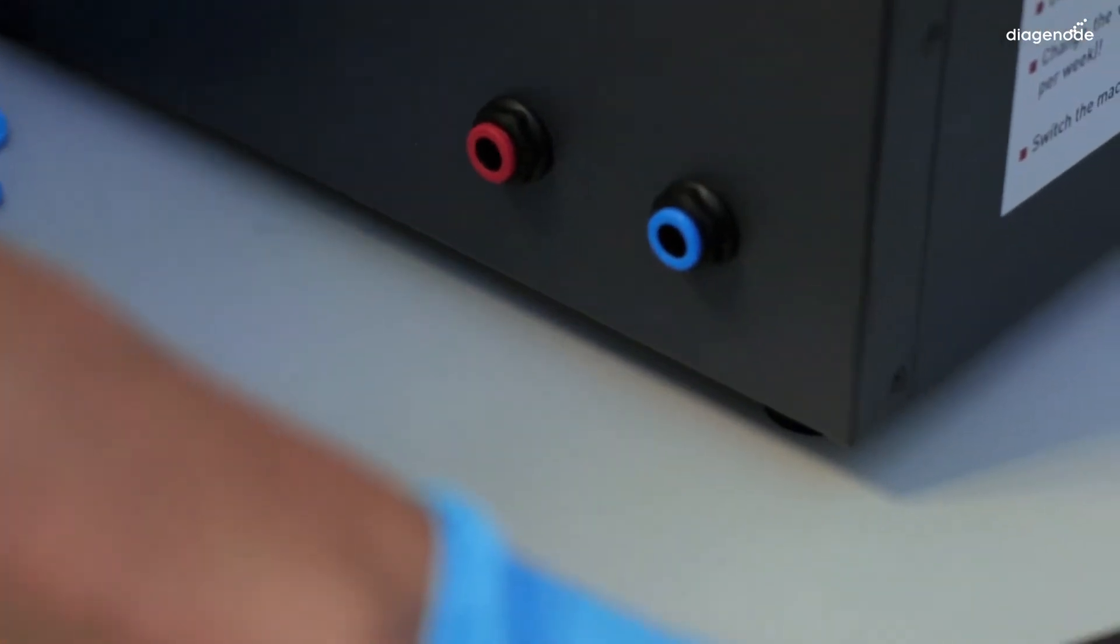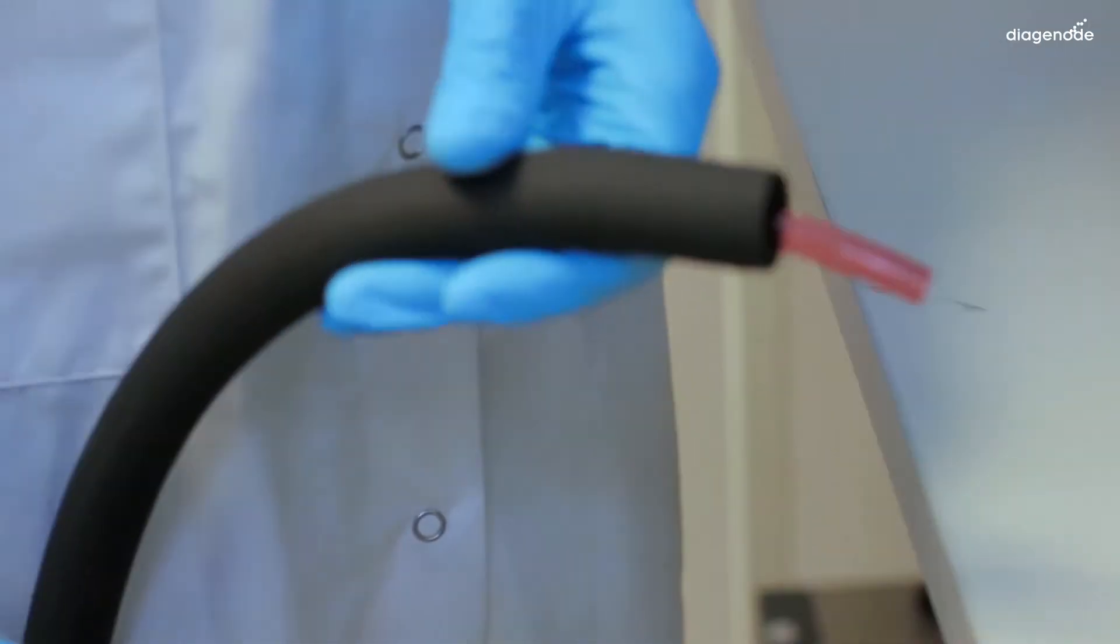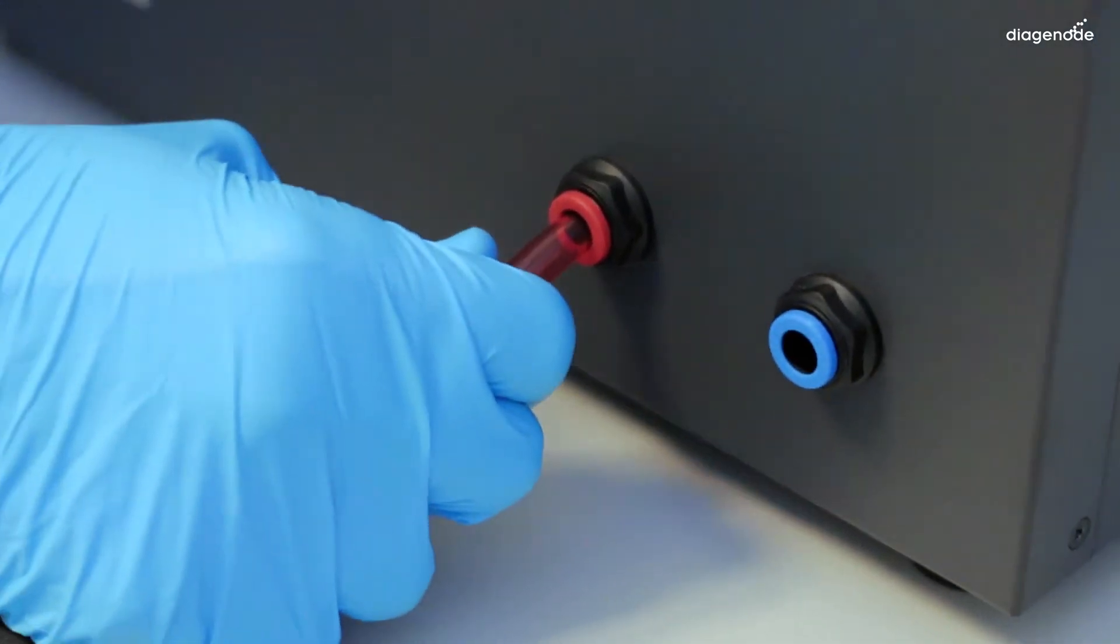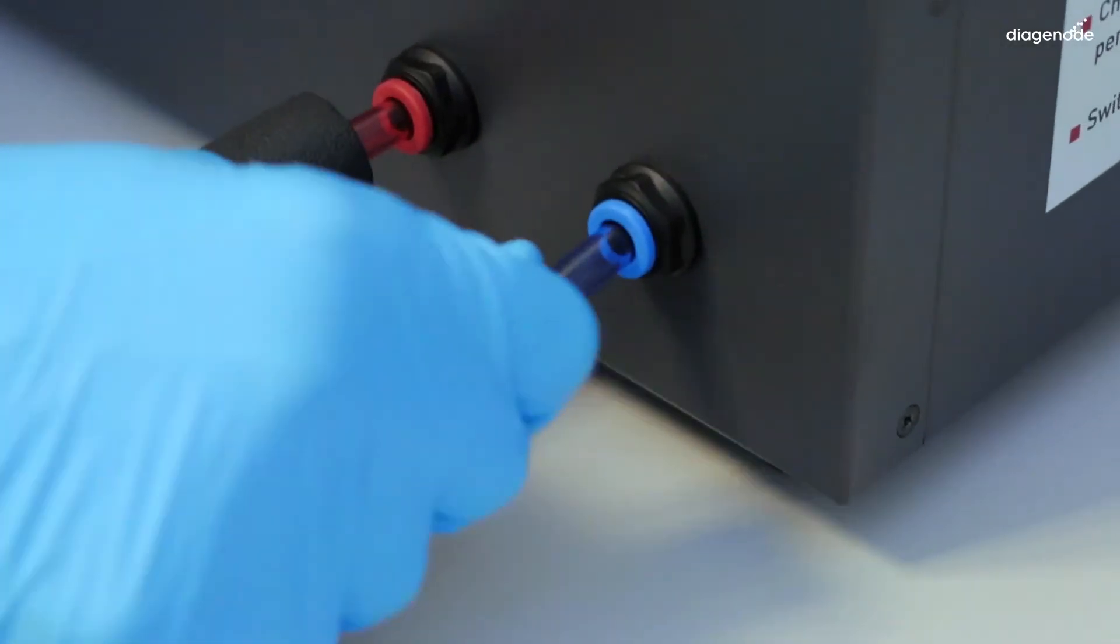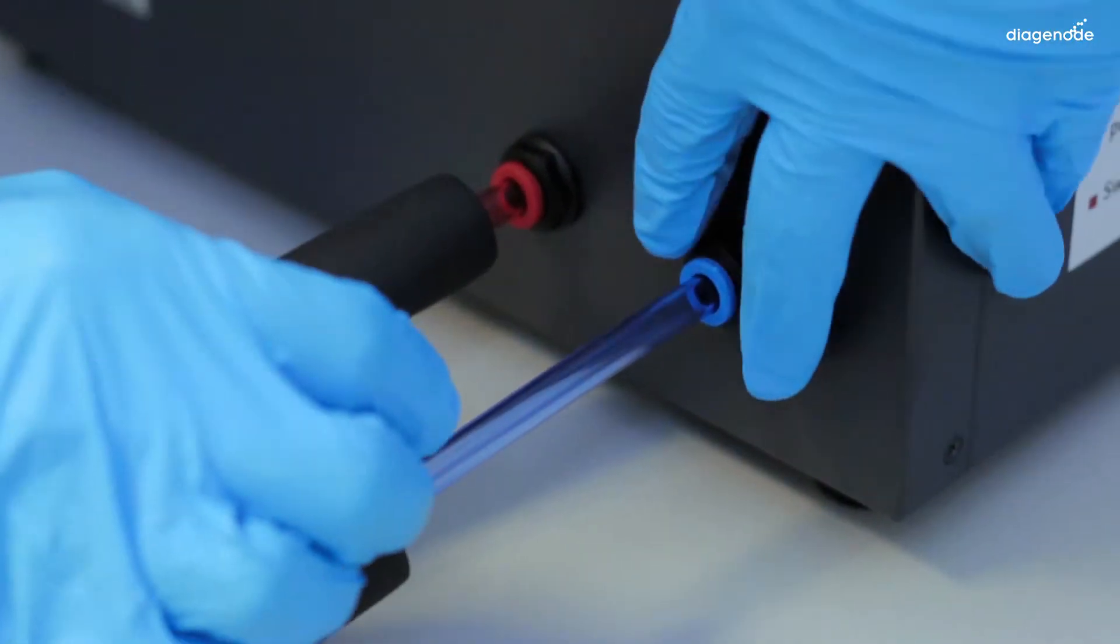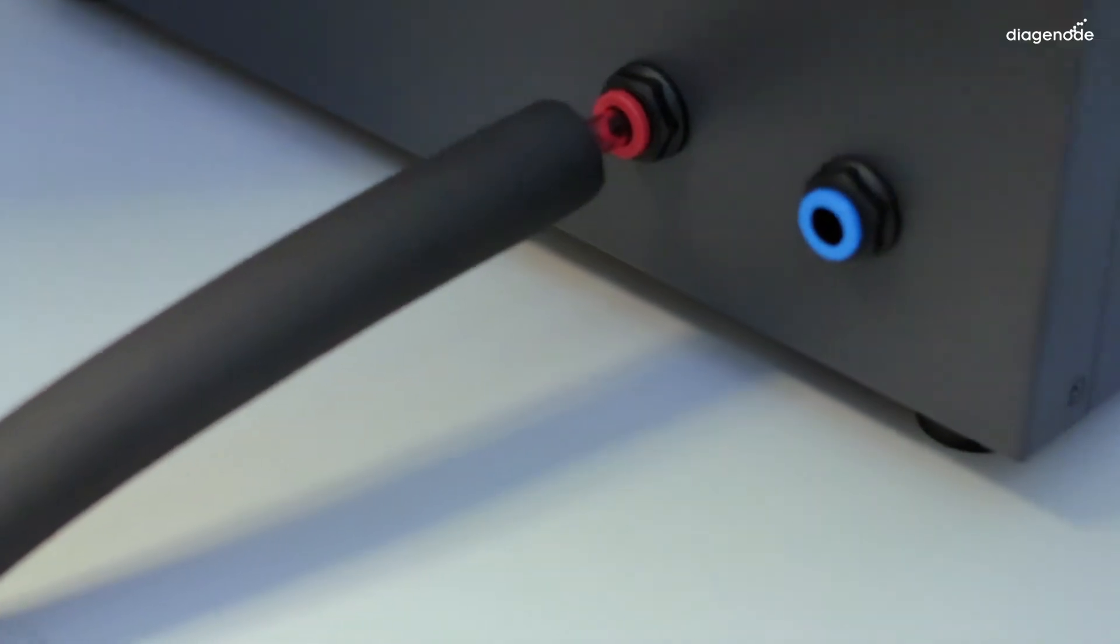We will now connect the BioRuptor with the cooler. Insert the cooling long red and blue isolated tubing by inserting them into the connectors. To check if they are well plugged, try to take them out. Indeed, it's well plugged. If you really want to take them out, just push the ring while taking it out.